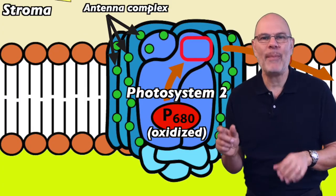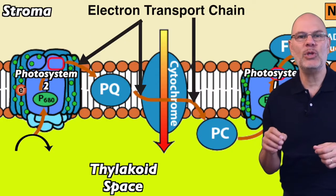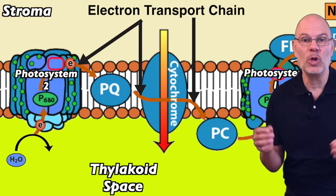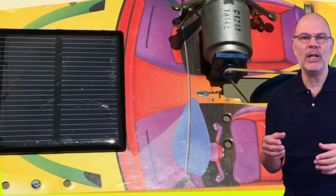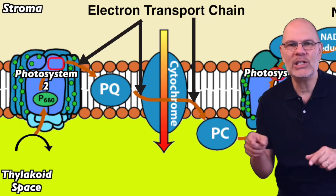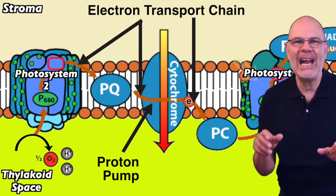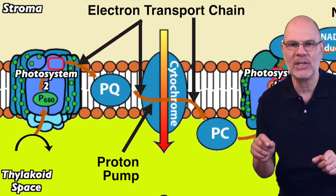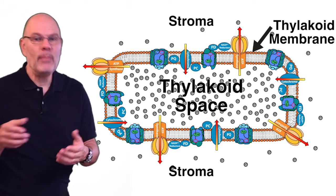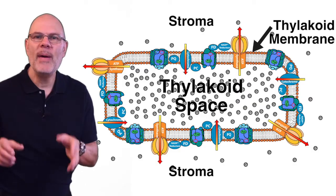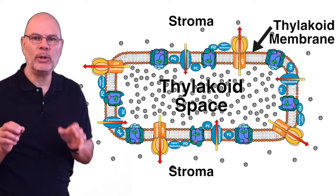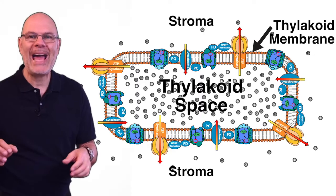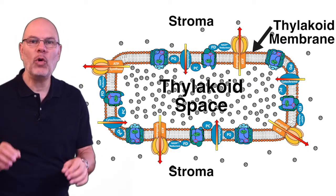Let's follow what happens with this boosted electron. It flows along photosystem 2's electron transport chain. This flow makes up an electrical current powered by solar energy. In photosystem 2, the electricity powers tiny proton pumps that pump protons from the stroma to the thylakoid space. The thylakoid space is surrounded by the thylakoid membrane, and the membrane's phospholipid bilayer is not permeable to protons, making it — as far as protons are concerned — a closed compartment.